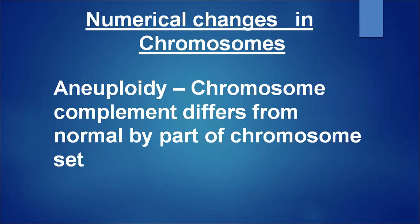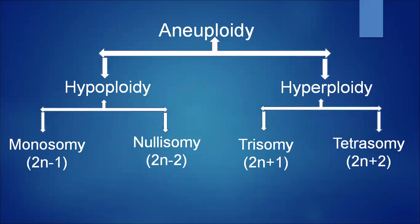What is aneuploidy? Aneuploidy is where the chromosome complement differs from normal by part of a chromosome set — there is a change in chromosome number relative to its simple basic number. These are called aneuploids. Aneuploidy is divided into two types: hypoploidy and hyperploidy.